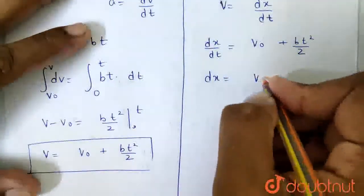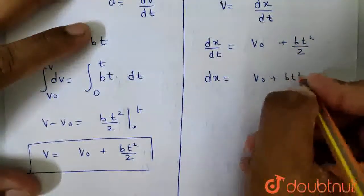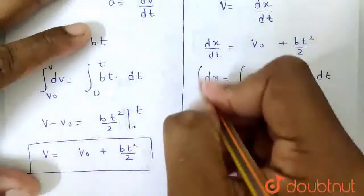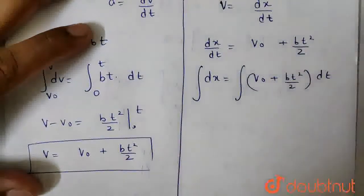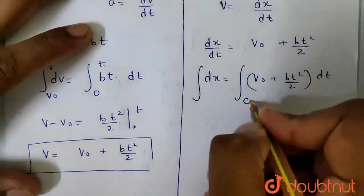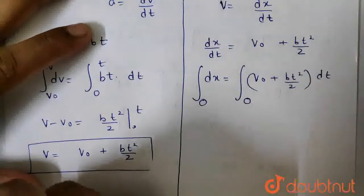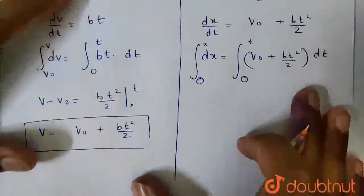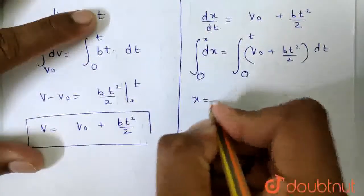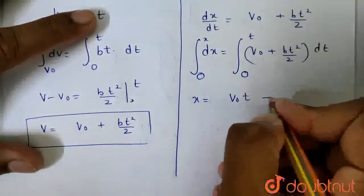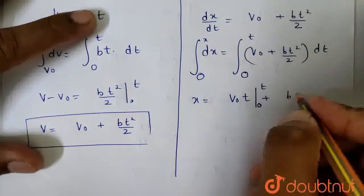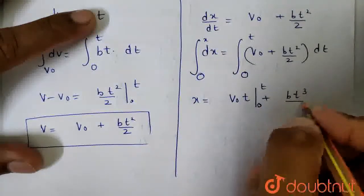v0 plus bt square by 2 into dt. Integrating, we get v0t plus the integration of bt square by 2, which gives bt cube by 6.